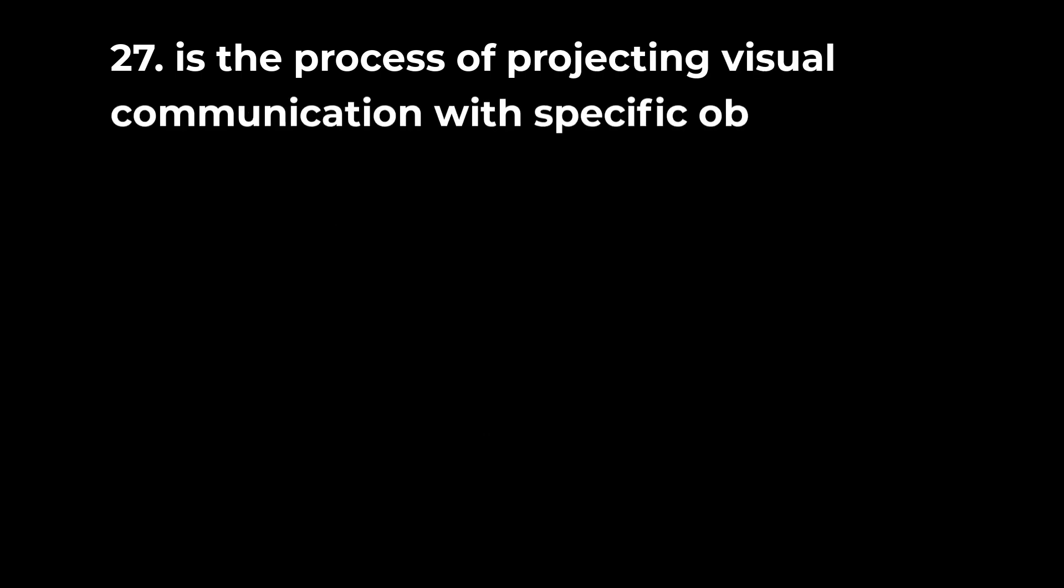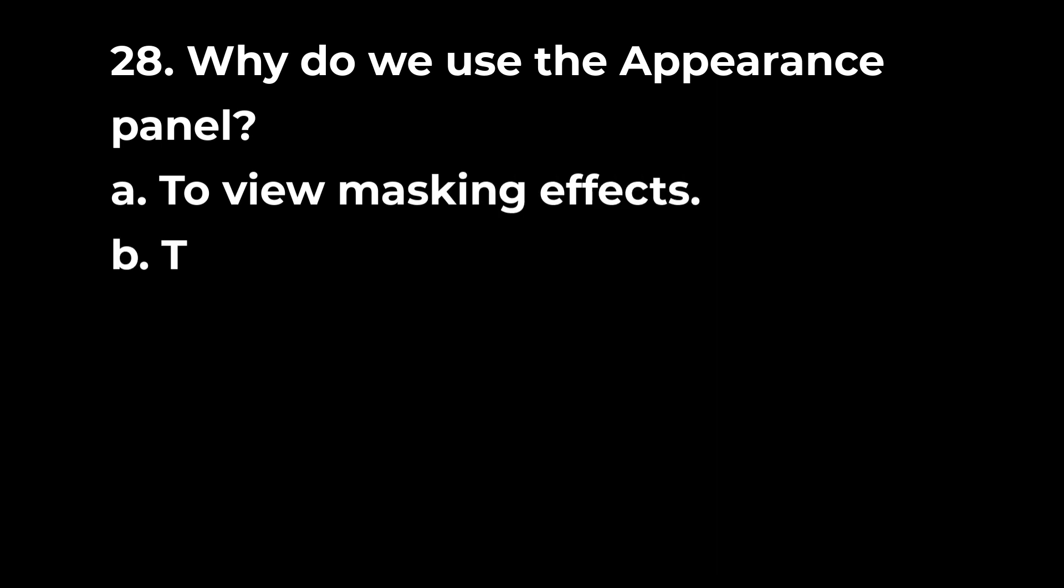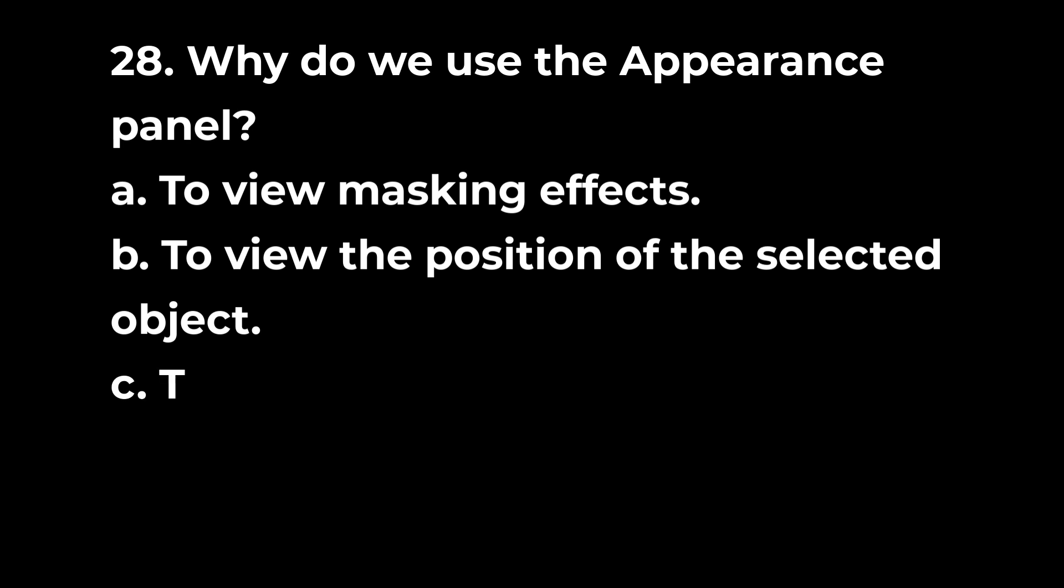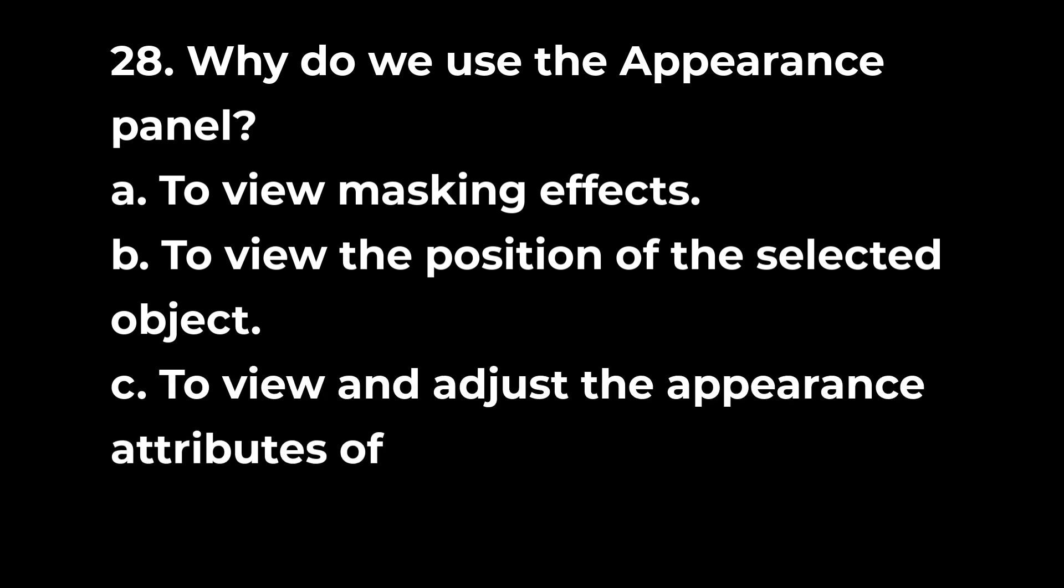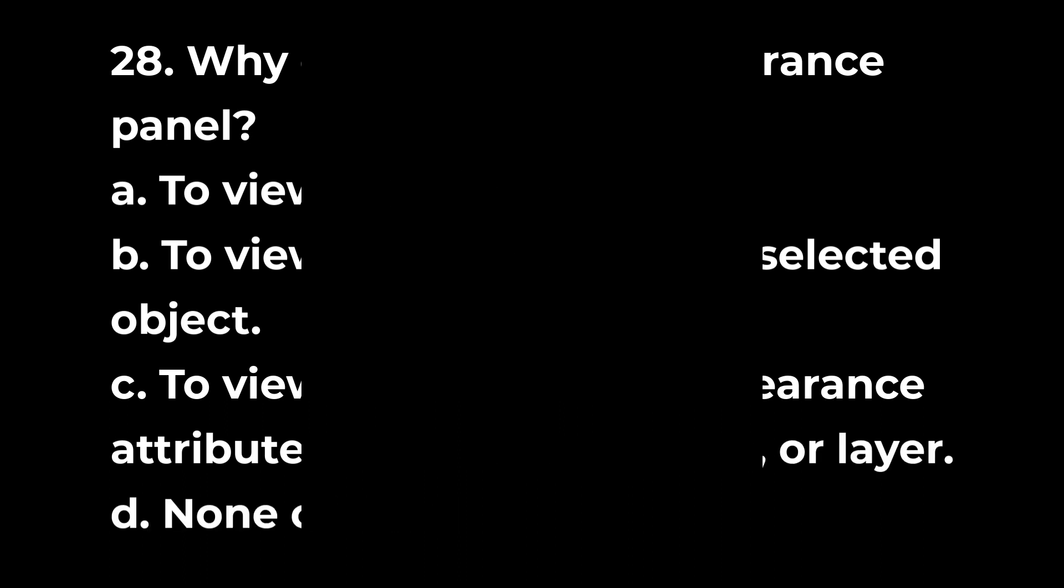Question 27: Is the process of projecting visual communication with specific objectives? a. Design b. Expression c. Illustration d. Graphic design. Question 28: Why do we use the appearance panel? a. To view masking effects b. To view the position of the selected object c. To view and adjust the appearance attributes of an object, group, or layer d. None of the above.